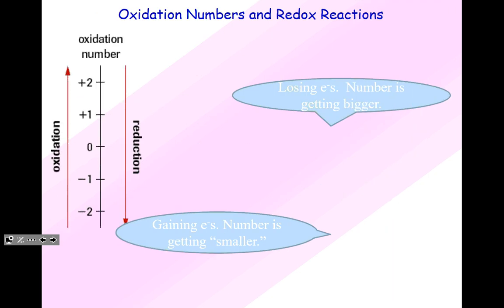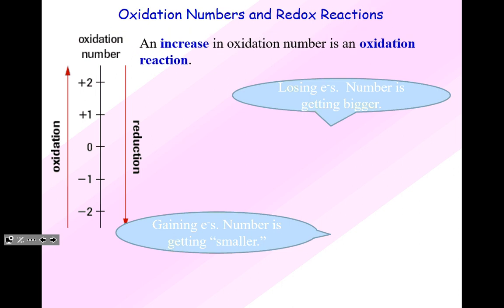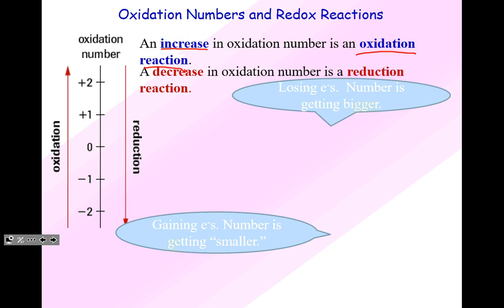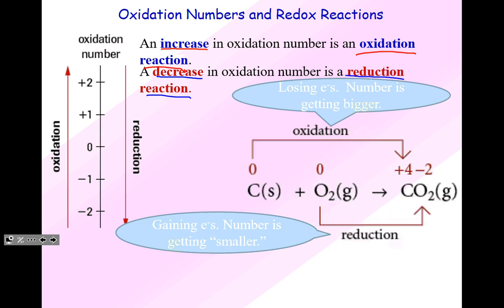Why do we care about this? Oxidation numbers and redox reactions — we're going to look at what's happening with the oxidation numbers to determine if a reaction is reduction or oxidation. An increase in oxidation numbers is an oxidation reaction; a decrease in oxidation numbers is a reduction reaction. Here's an example: take a look at carbon and oxygen. Since they're elements here, carbon has an oxidation number of zero, and oxygen gas also has an oxidation number of zero.